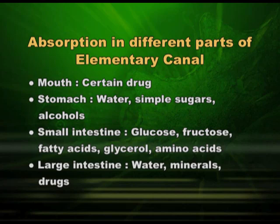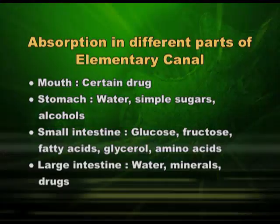Coming to large intestine or colon. In the large intestine, the food which arrives has already been digested and absorbed, so what can be absorbed from here? Some water, some minerals, and some drugs. Whenever you eat any medicine, it starts getting absorbed from the mouth, then stomach, then small intestine, and even in the large intestine. Because any drug or medicine is not part of our food, the system is definitely disturbed. But if you are unwell you have to take medicine; otherwise one should not take any drugs just because you feel like it. So drugs are difficult for our alimentary canal.